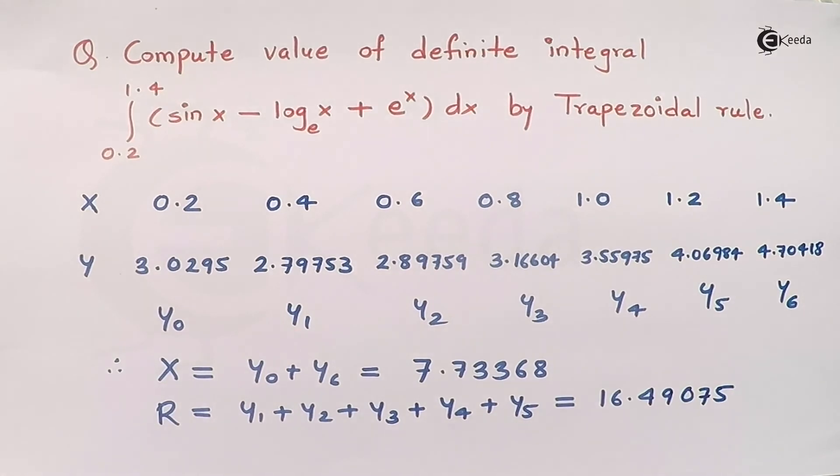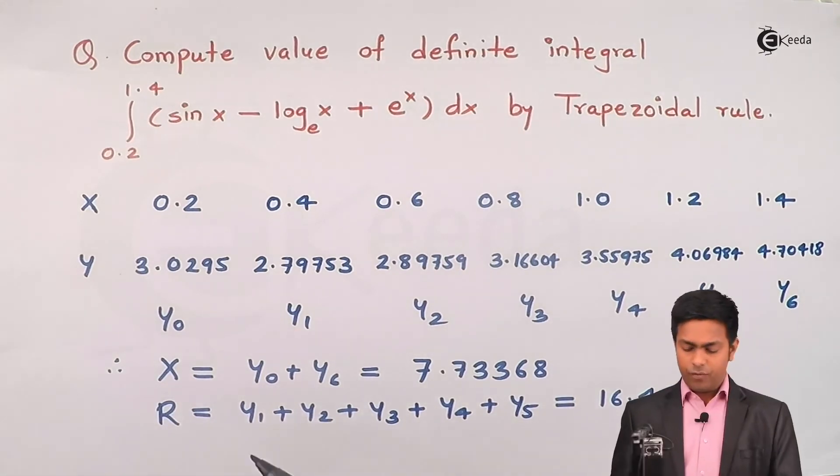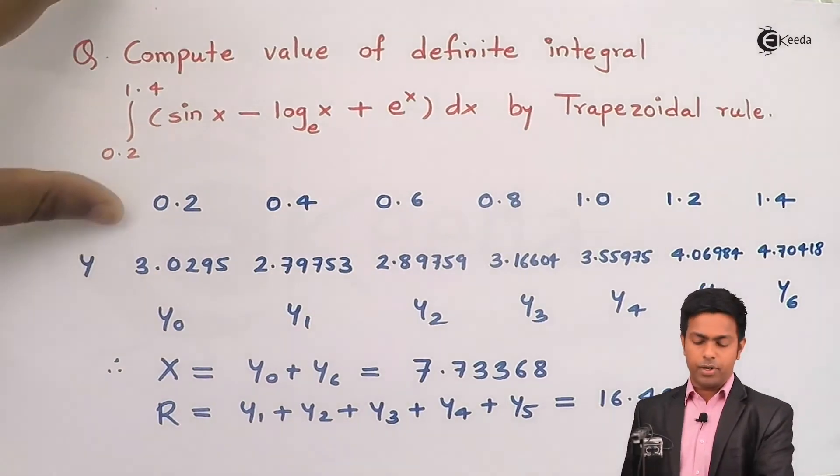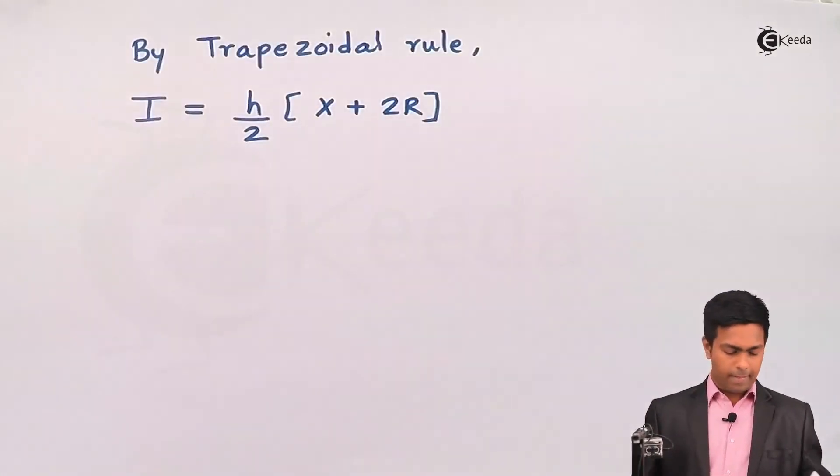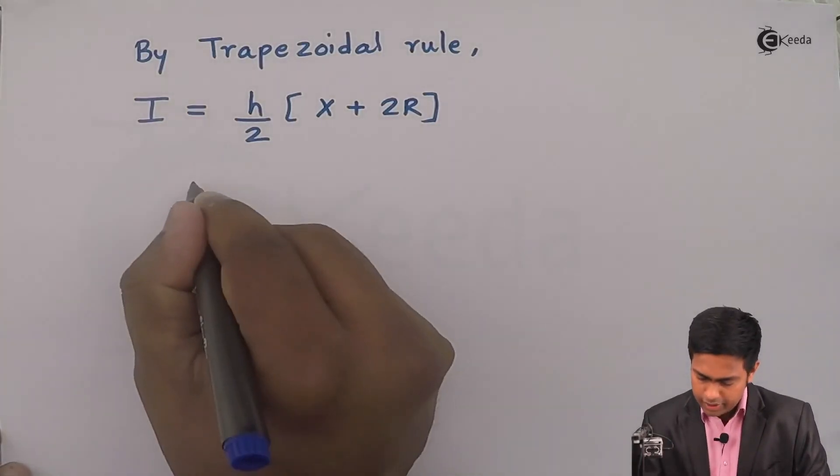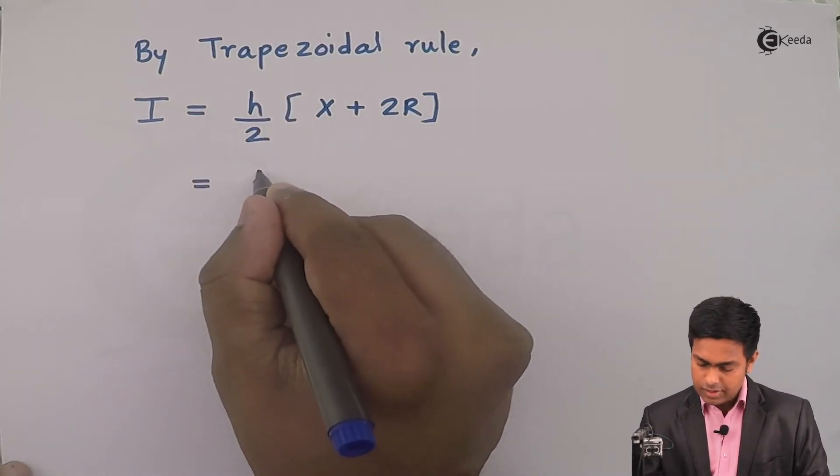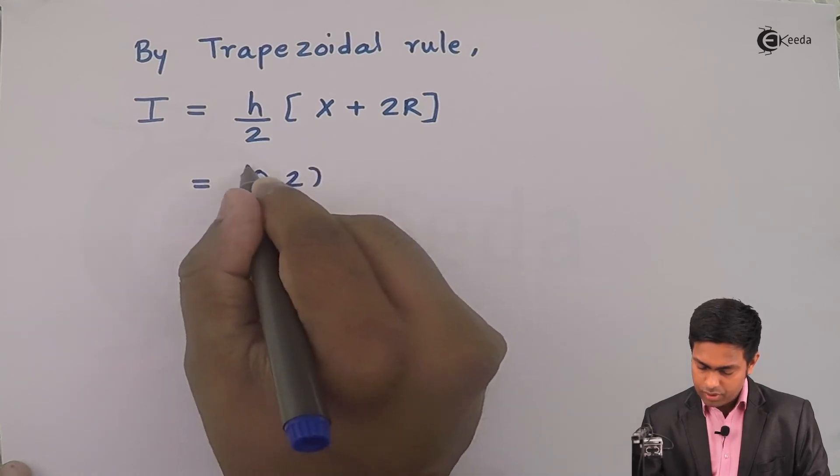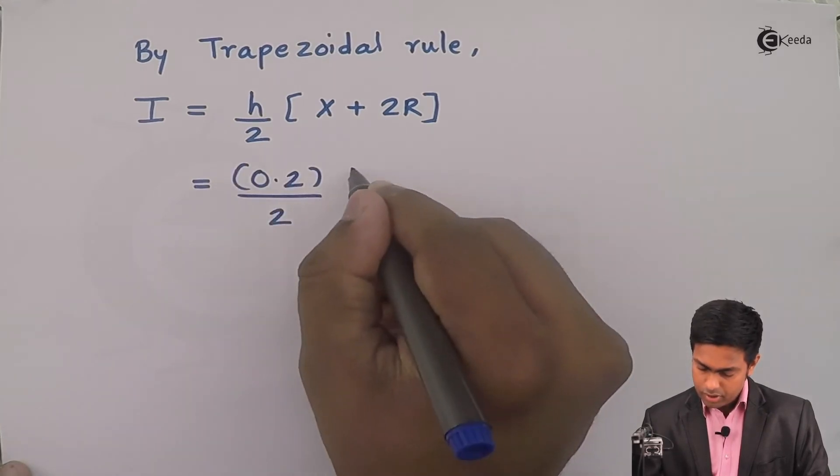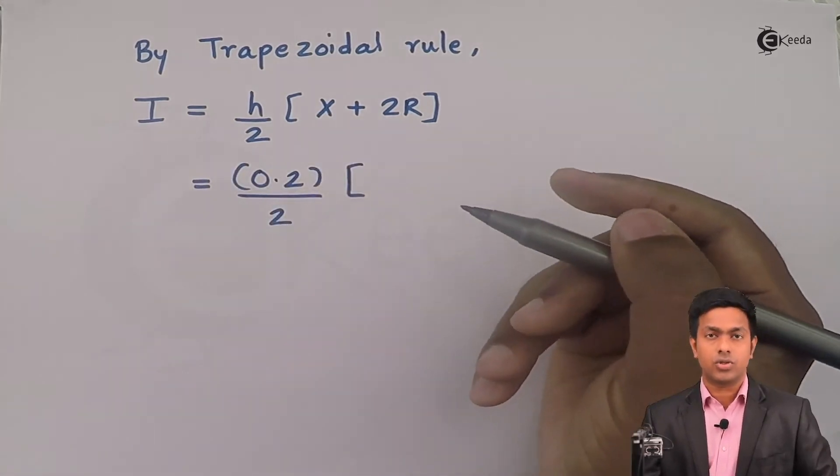So we got the value of X and R. Now we'll put these two values in the formula. So here it will be h, that is 0.2 by 2 into X plus 2R. That would be...